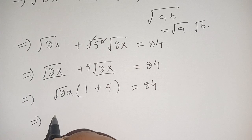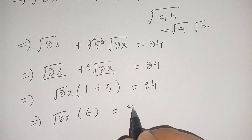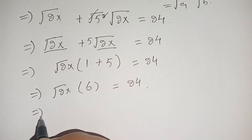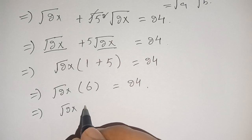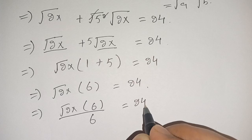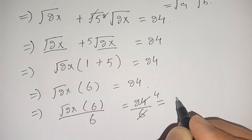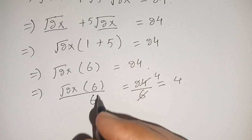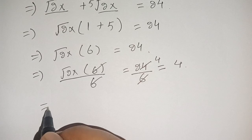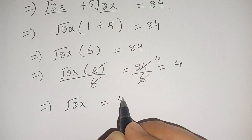Now we get square root of 2x times 6 is equal to 24. Dividing both sides by 6, we get 24 divided by 6 which equals 4. So square root of 2x is equal to 4.